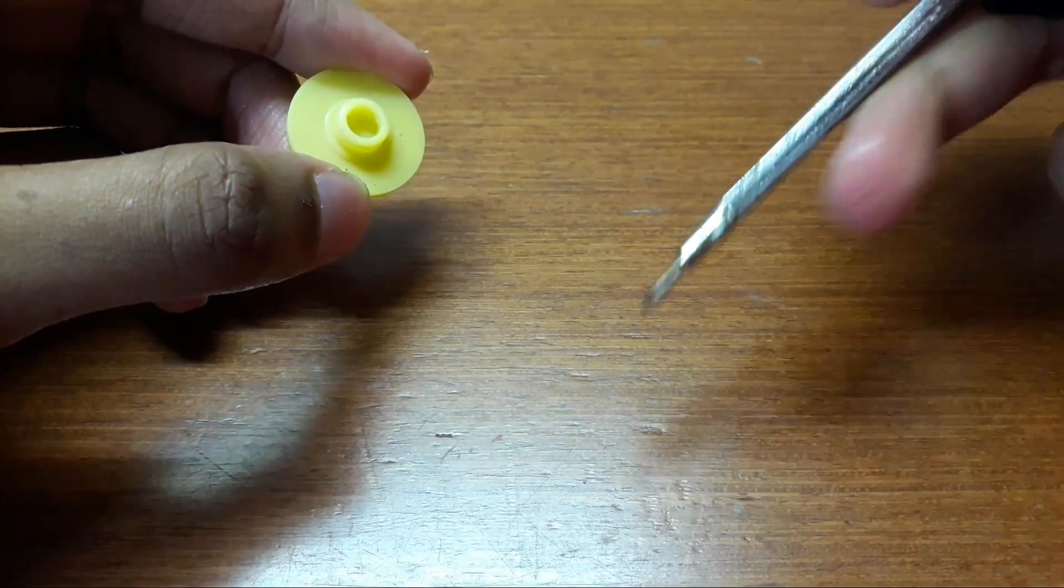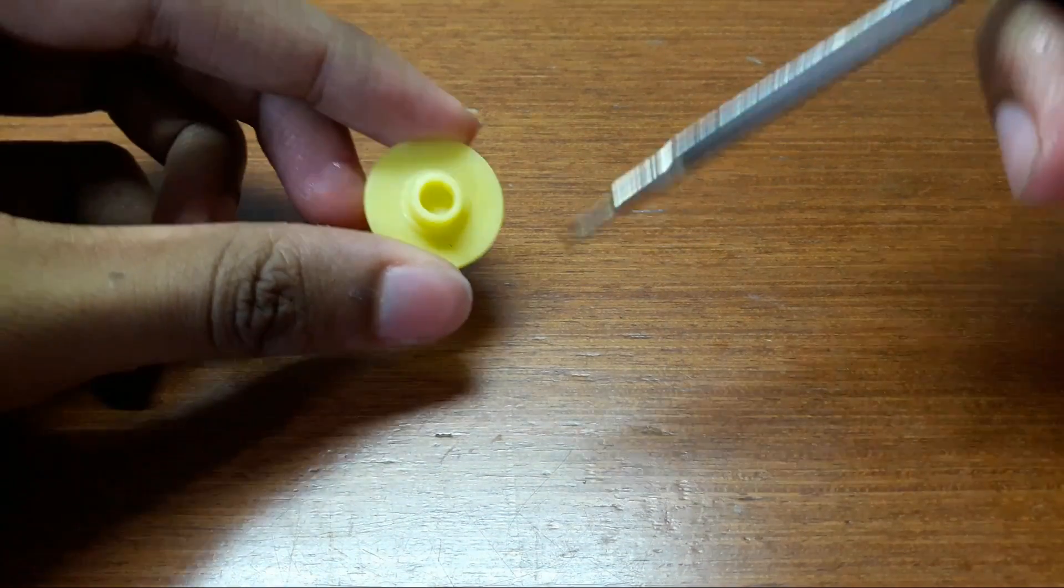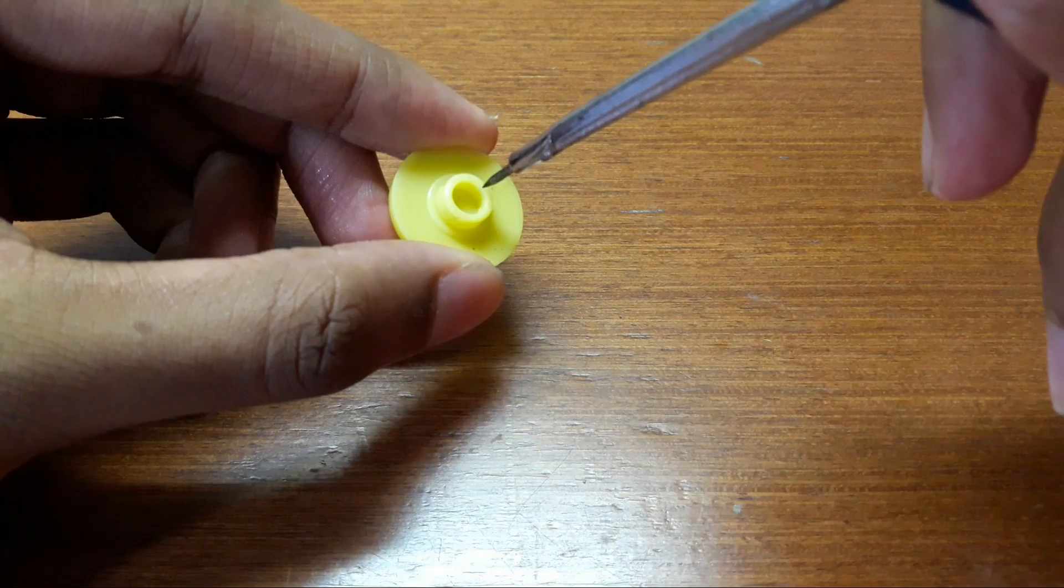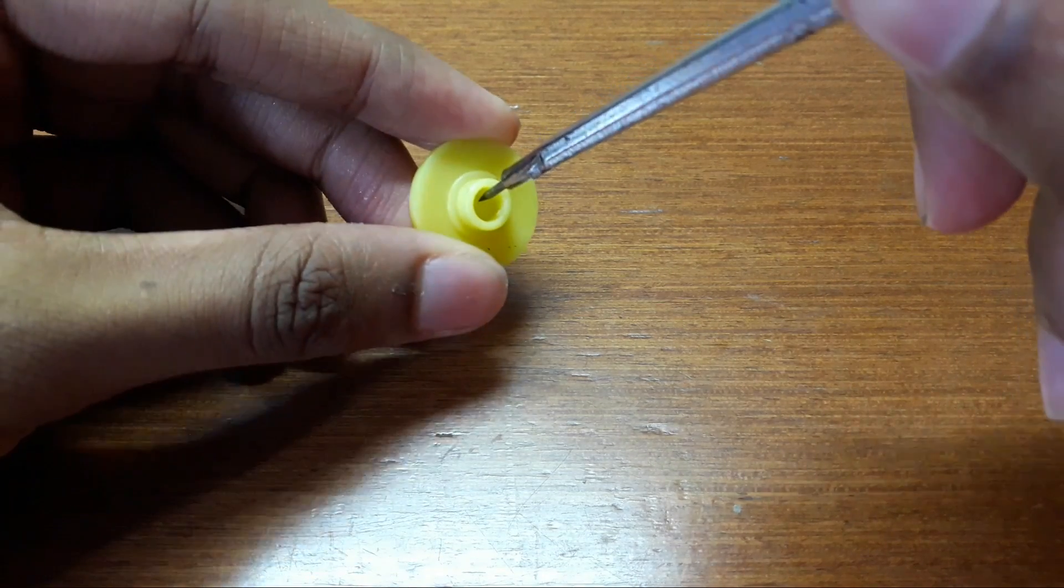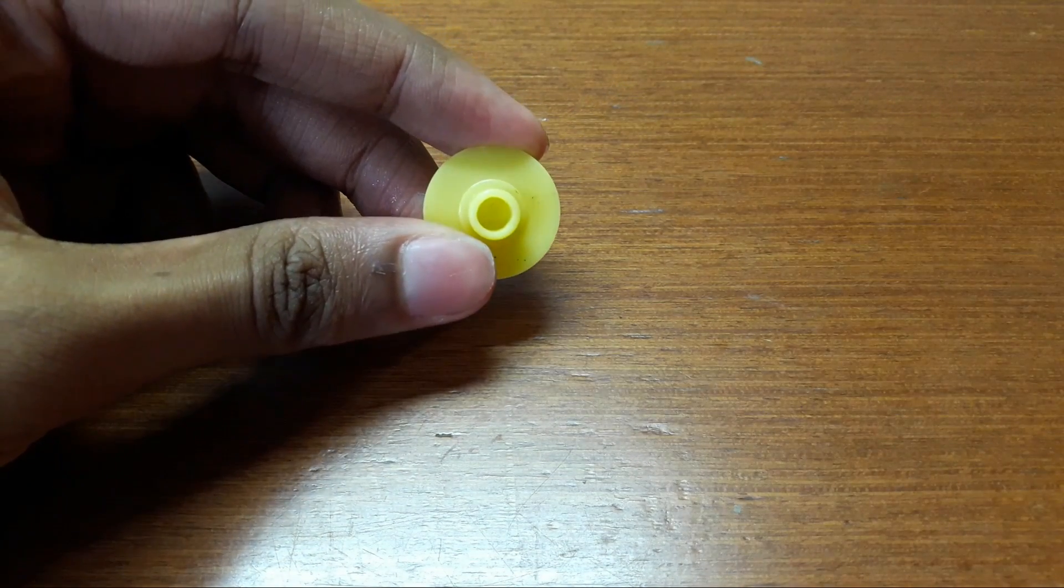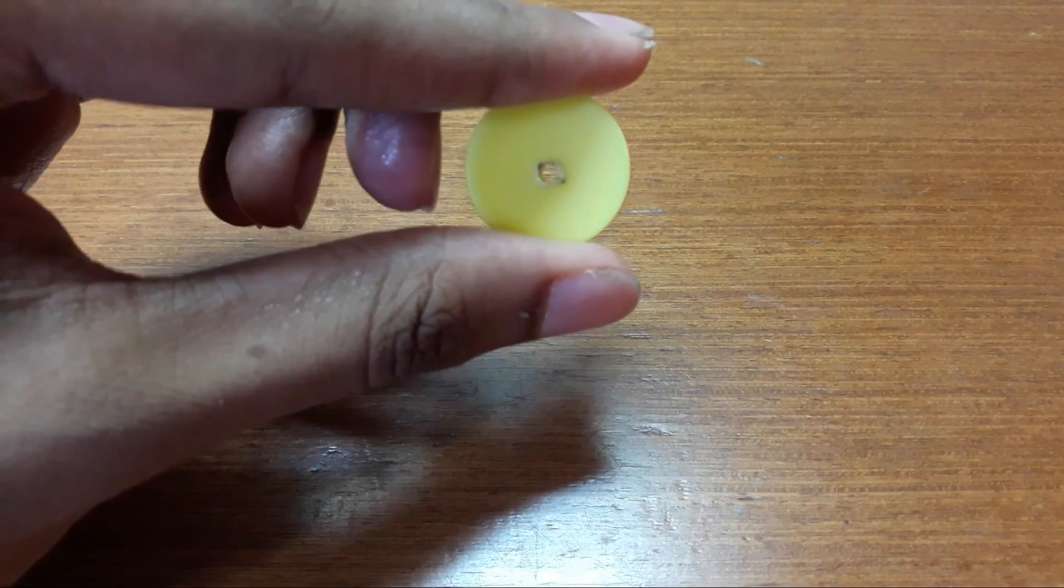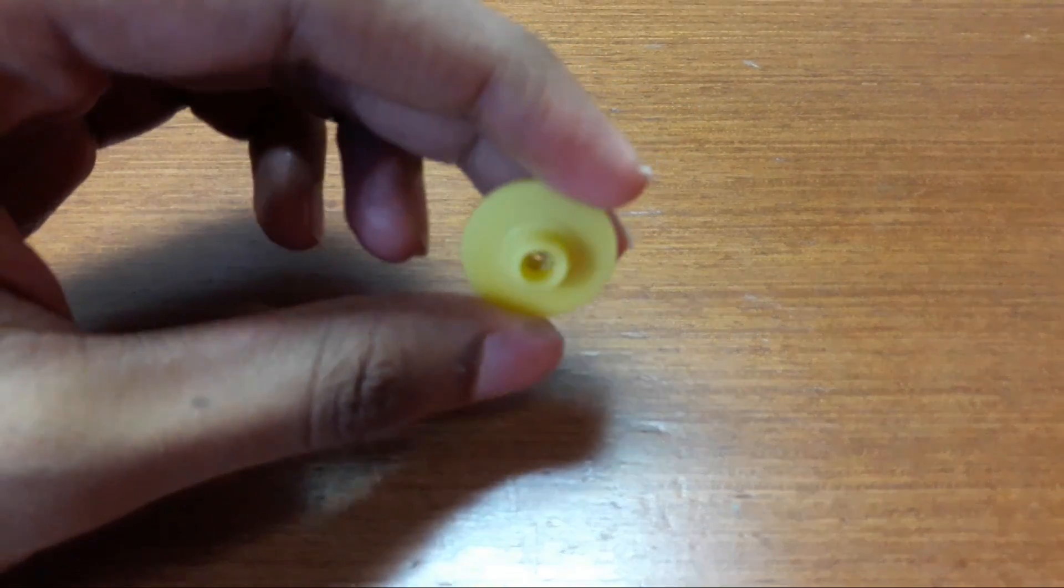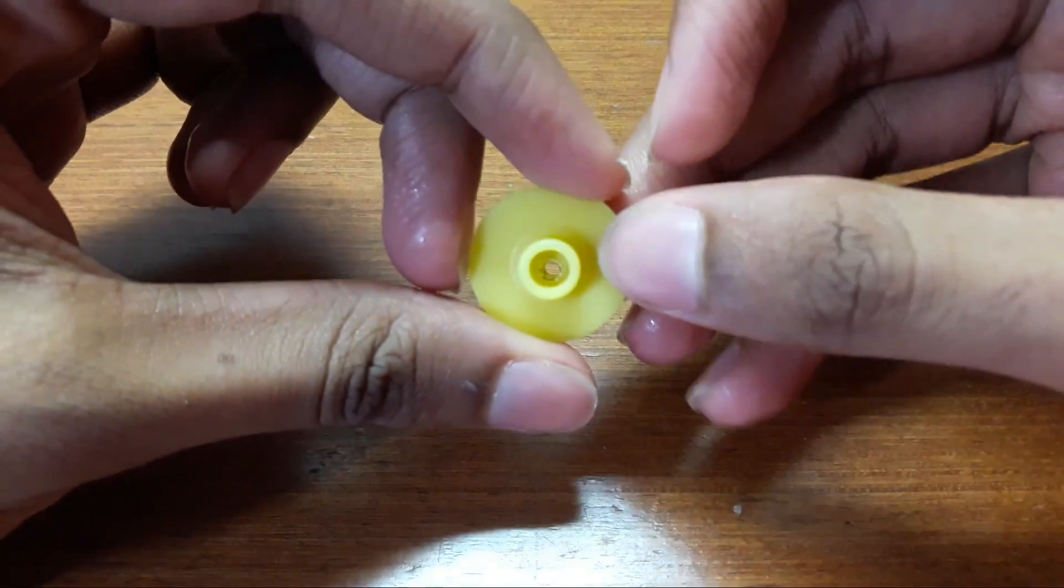It will be easier if you heat the divider and then make a hole, because it will melt the plastic and you'll get a perfect hole. After melting the center and making a hole with the divider, you should get something like this.